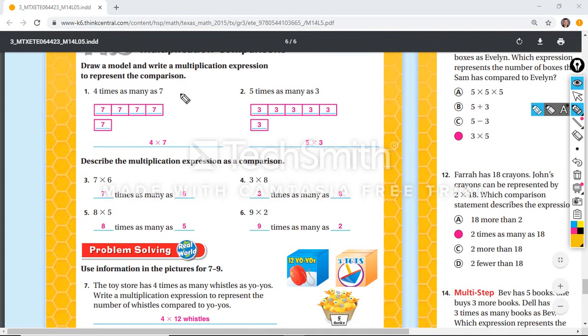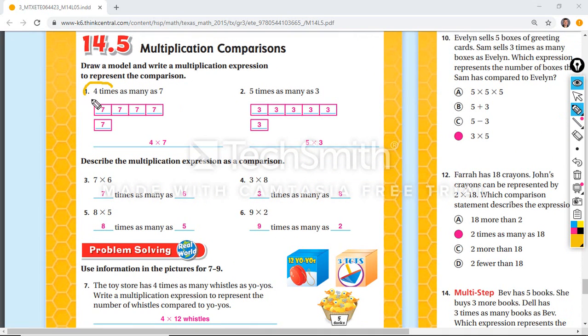So we take a look at drawing the model here. Remember from the first lesson, four times as many as seven. We know this number is the one that goes in the bottom. And there's four of them. And it's four times seven. Five times as many as three. We know three is in the bottom, and there's five of them. So it's five times three. Notice we don't have a product. We don't have the product, because these are expressions.